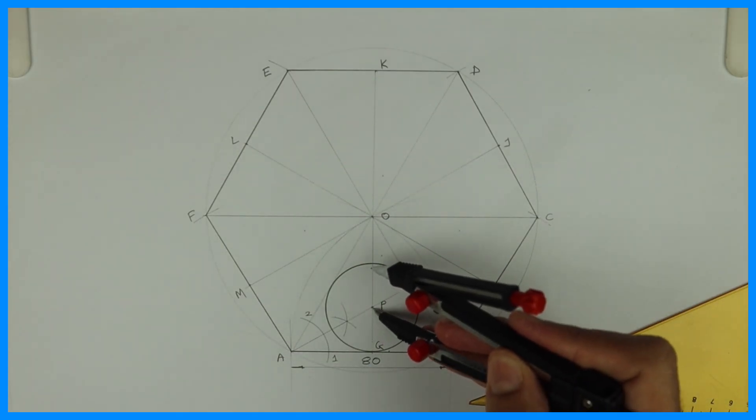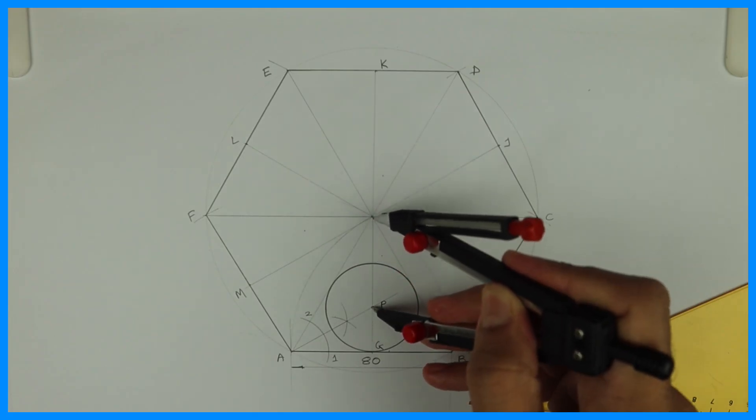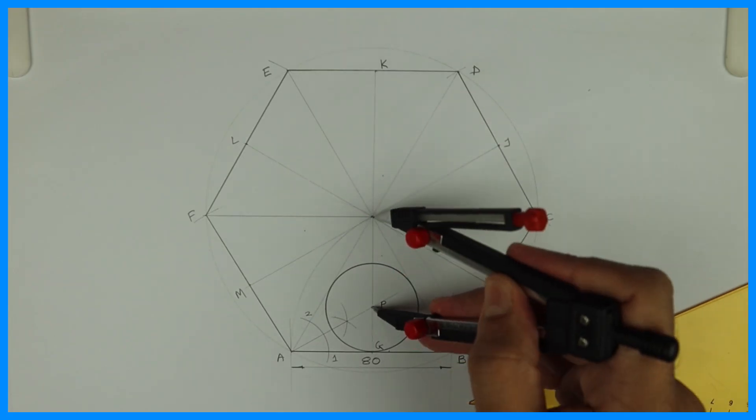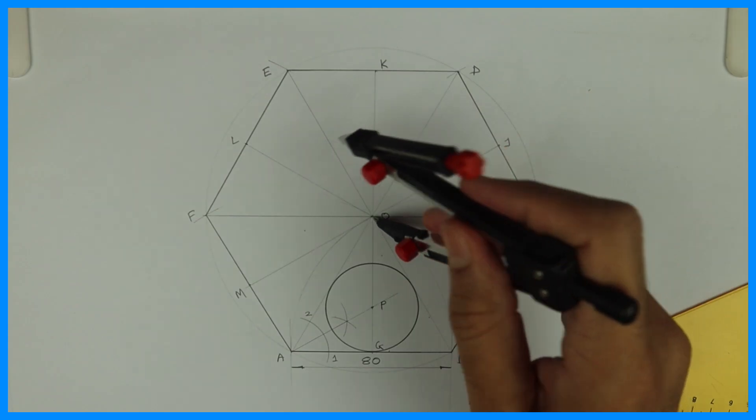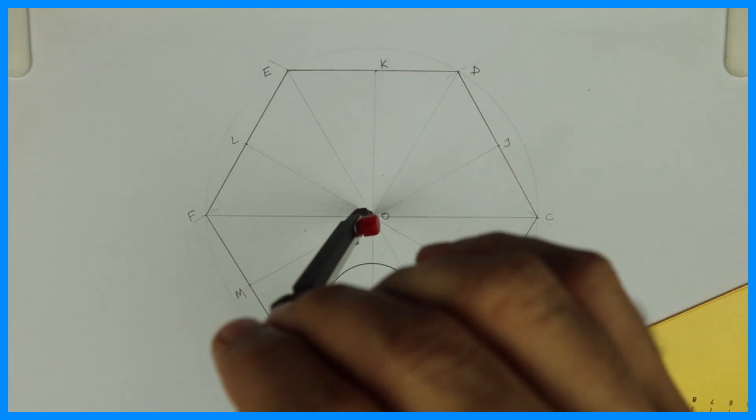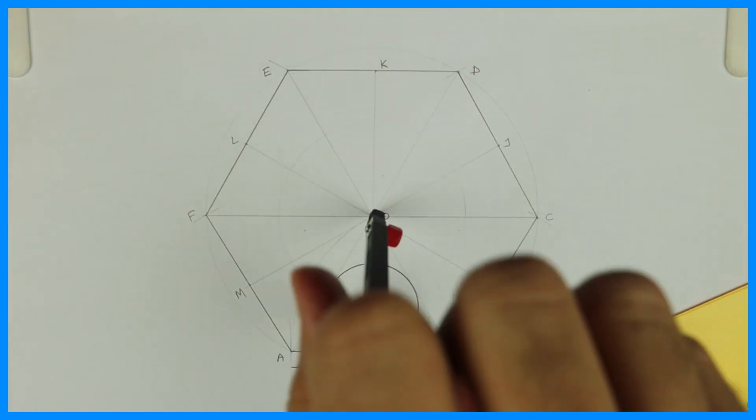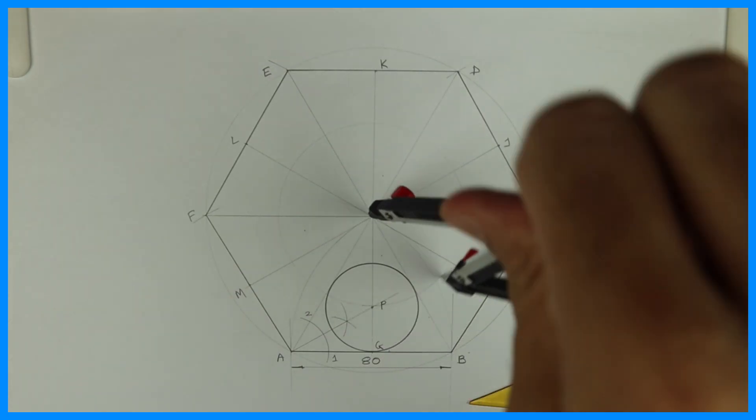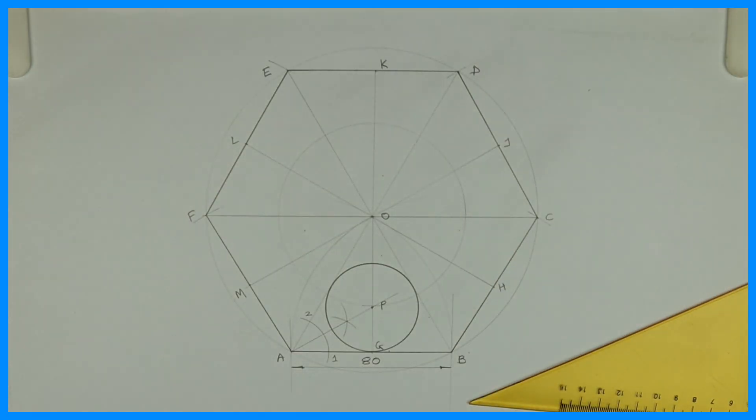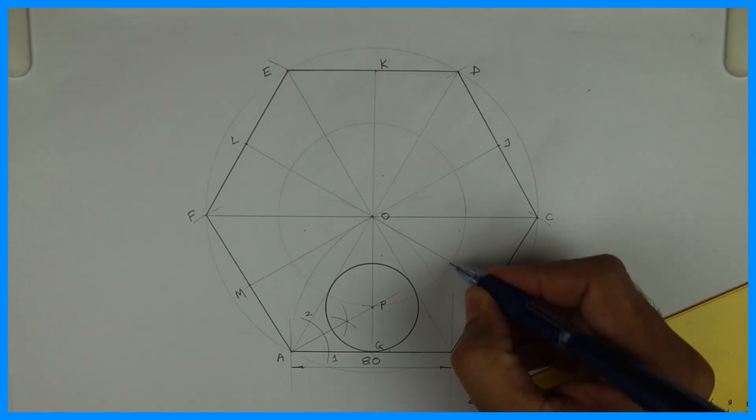After that take O to P and draw a circle. See take O to P. So why we are transferring this: so we'll get the required other points. So then it is easier to draw. We don't have to bisect each and every angle.